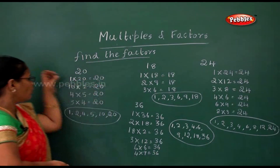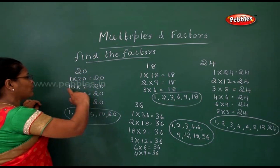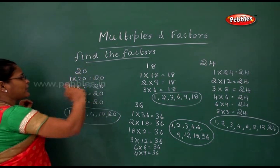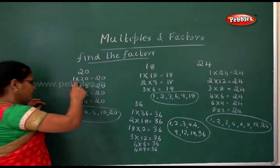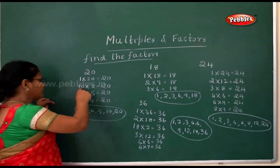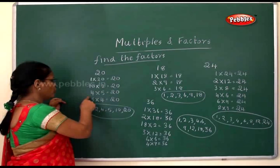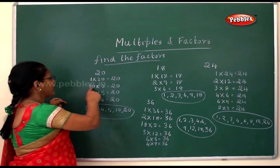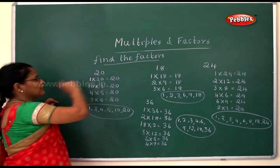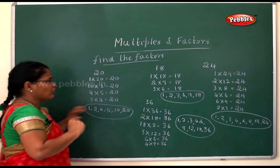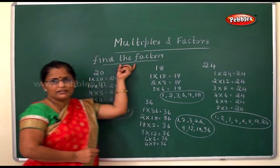To find the factors of a number, write all the multiplication expressions that give that number, then list all the numbers used. For example, the factors for twenty are one, two, four, five, ten, and twenty. This is how you find the factors.